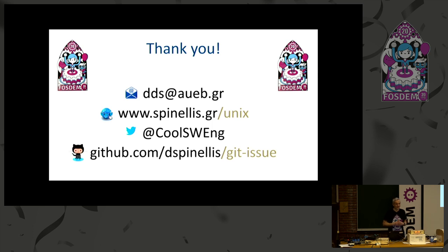Another question: what happens if there's a conflict when integrating with GitHub — for example, if someone modified a description that I also modified? In general, the same thing that happens when you pull data from a repository: you get a conflict and have to resolve it. If you push things upstream, things might get modified. Because GitHub doesn't have a way to do this atomically, a proper process would be to import the issues again, resolve any conflicts, commit them, and then push — and hopefully nobody has done that in that small window.